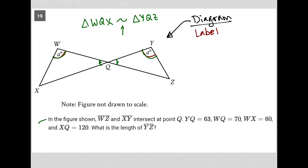So let's read what we're also given about those sides here. It says in the figure shown line segment WZ and line segment XY intersect at point Q. We see that. YQ equals 63, so I'm going to label that as 63 right here. WQ is 70, so that's more to label. Label that as 70. WX is 60, so I'm going to put that in there as well. And XQ is 120, so let's put that in there as well.